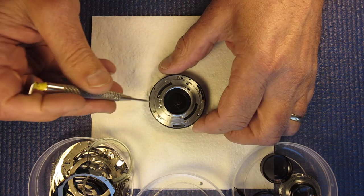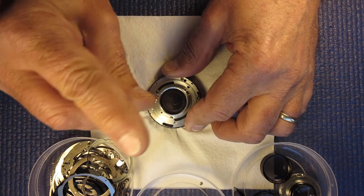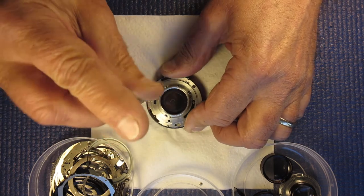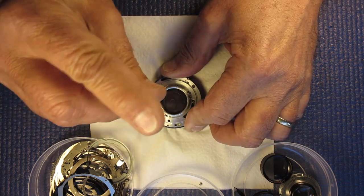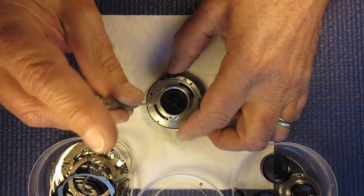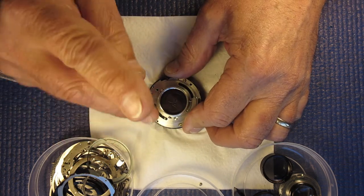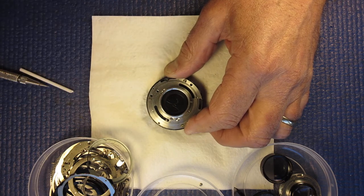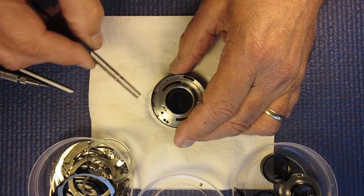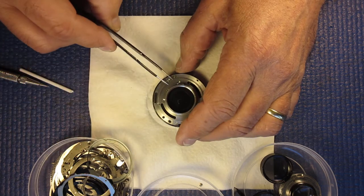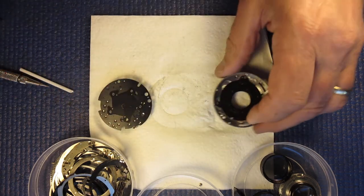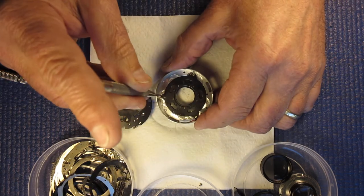All right, so here's the shutter case. We can remove that. Three screws, they're countersunk screws or flat head screws depending on what they call them in your neck of the woods. Here's the case.